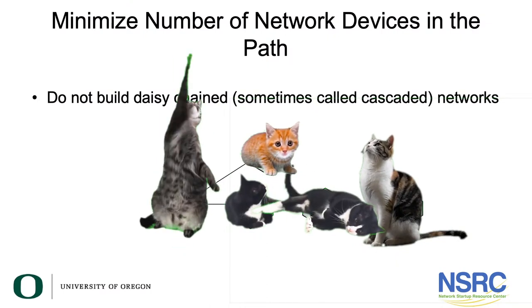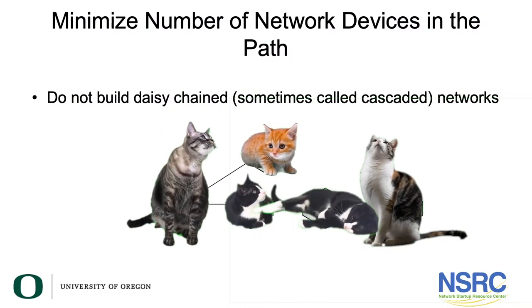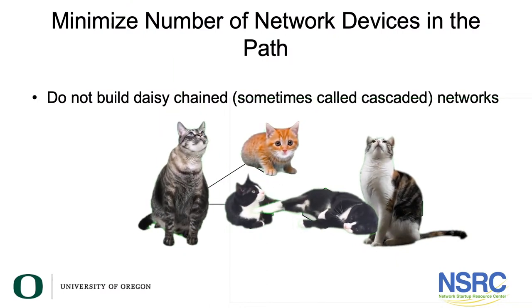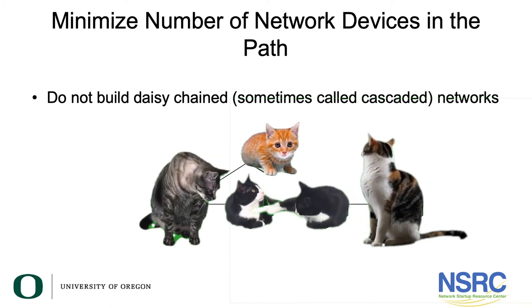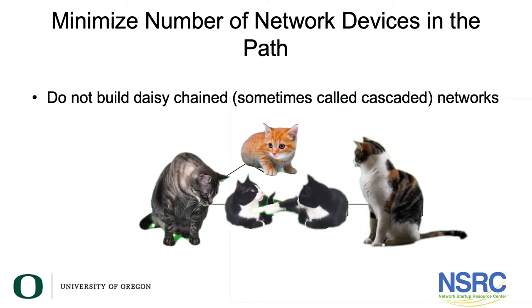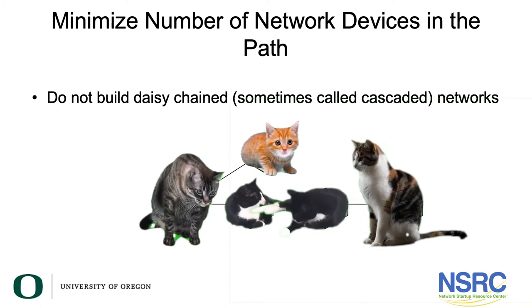They simply run some Cat5 or Cat6 cable down to the switch on the adjacent floor, and then somebody on the floor above that does the same. You end up with these cascaded network elements where if one device in the path fails, then everybody past that point is out of service.